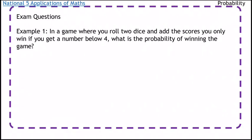Let's look at some exam questions for probability. Example one: In a game where you roll two dice and add the scores, you only win if you get a number below four. What is the probability of winning the game? I'm going to draw a table that will add up the scores for me and work out how many ways of getting a number below four there are.